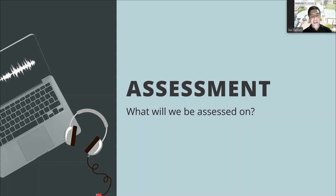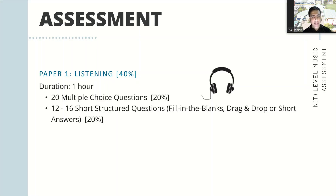I will now share how the assessment is done. The assessment is organized into two components: Paper 1 and Paper 2. For Paper 1, it is a listening e-paper, meaning students will be doing their assessment on a computer instead of traditional pen and paper. They will have to listen to musical extracts and answer questions based on what they have heard. These musical extracts are based on the four areas of studies that I have briefed earlier.